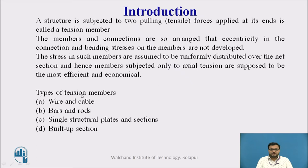Now we'll see types of tension members. Basically there are four categories: the first one is wires and cables, second is bars and rods, third is single structural plates or sections, and fourth is built-up sections. Sections include rolled sections.